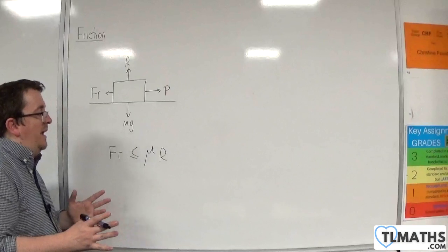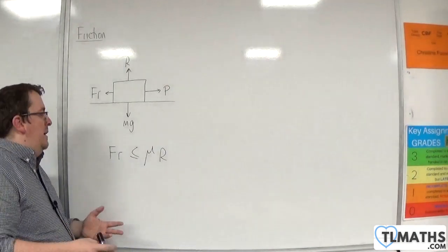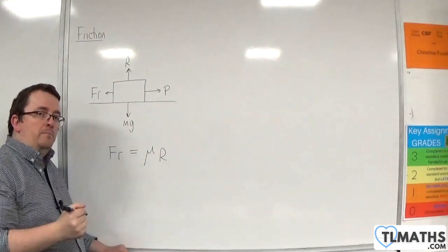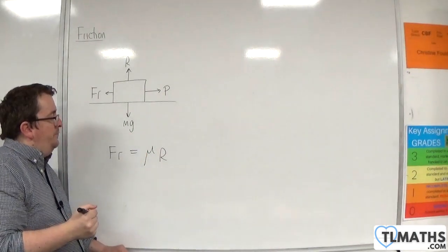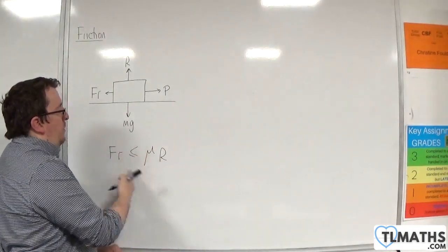And in the majority of cases, you've got the particle is moving, in which case you most often use friction equals mu times R. But in general, this is the formula that we work with.